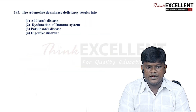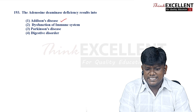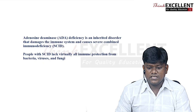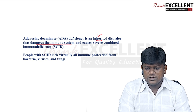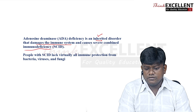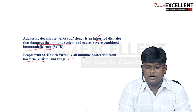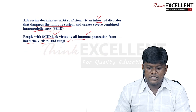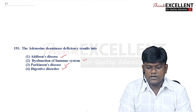Question 193: adenosine deaminase (ADA) deficiency results in — options are dysfunction of immune system, Parkinson's disease, and digestive disorder. ADA deficiency is an inherited disorder that damages the immune system, causing severe combined immunodeficiency (SCID). People with SCID lack virtually all immune protection from bacteria, viruses, and fungi. Option 2 — dysfunction of immune system — is the right answer.